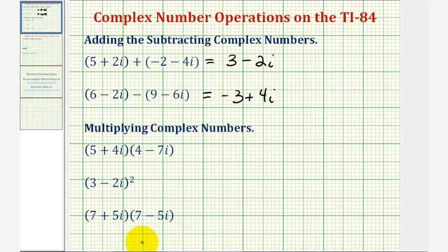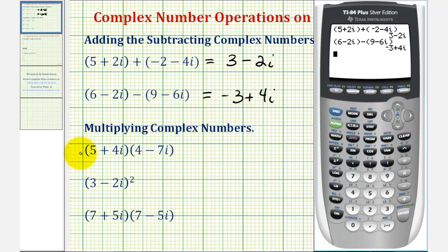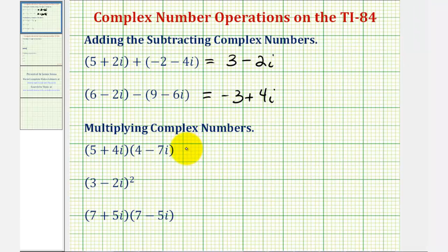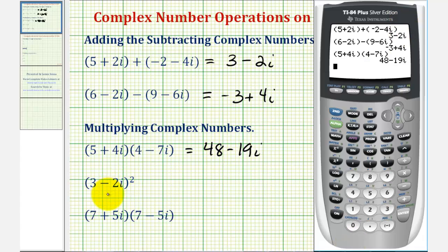Now we'll look at products of complex numbers. So in our first example, we have the complex number five plus four i times the complex number four minus seven i. So as you can see, once the graphing calculator is in complex mode, we really just need to type in what we see.